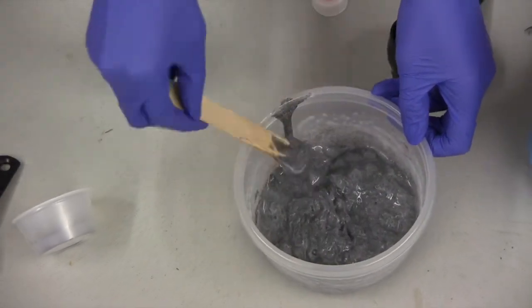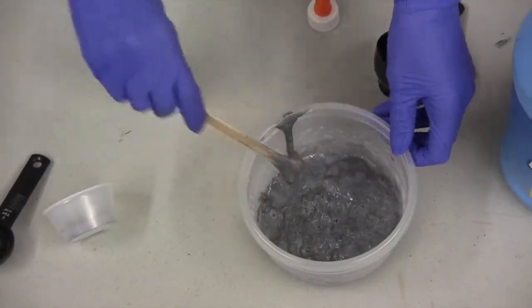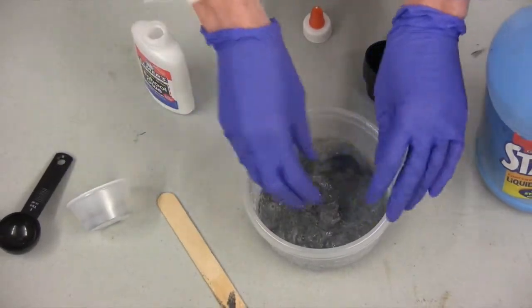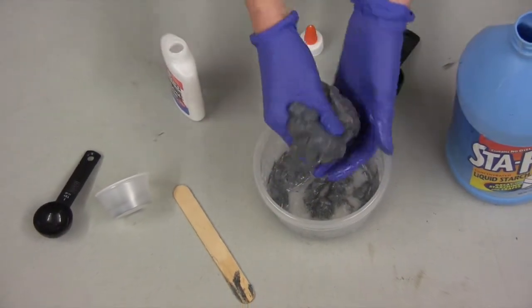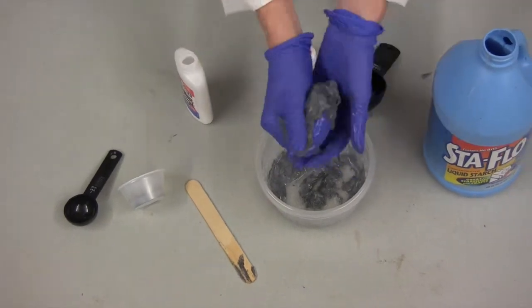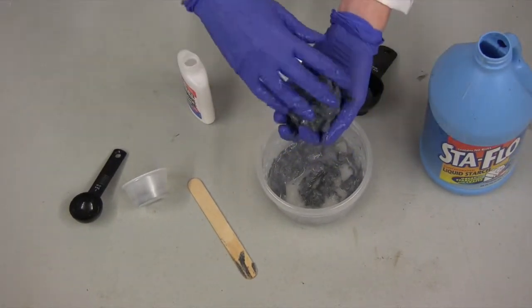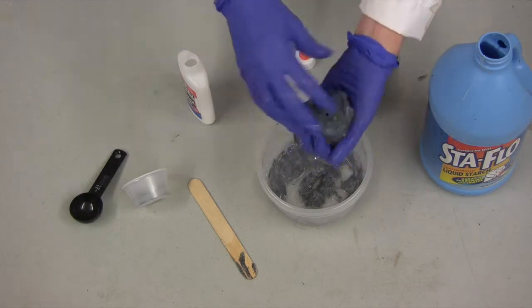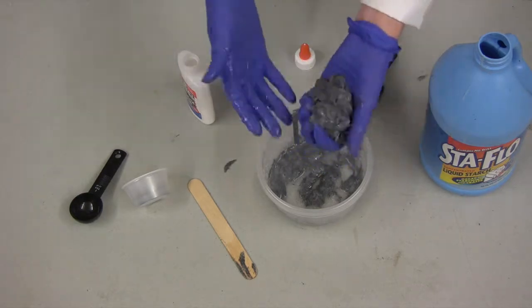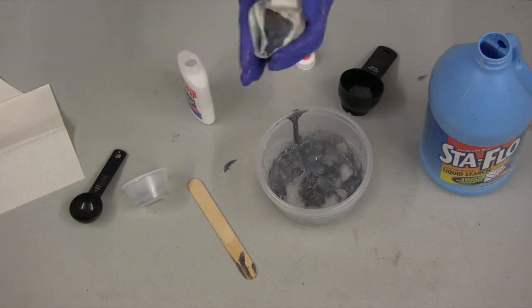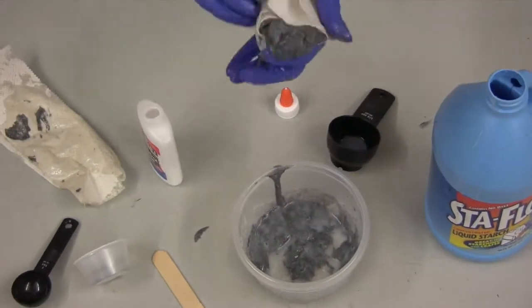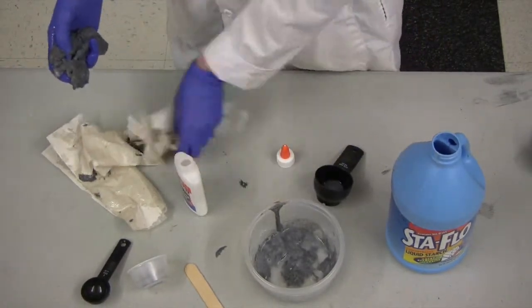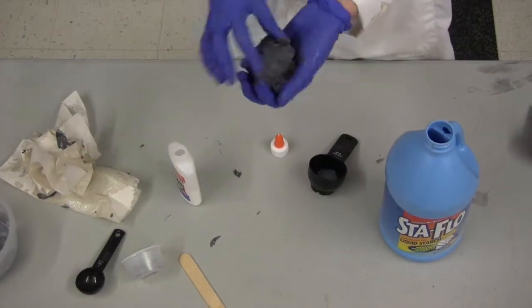From here you can pull out the majority of your blob and start mixing it with your hands. You can also grab a paper towel and get out some of the excess liquid. And the longer the polymer sits, the more dry it'll become.